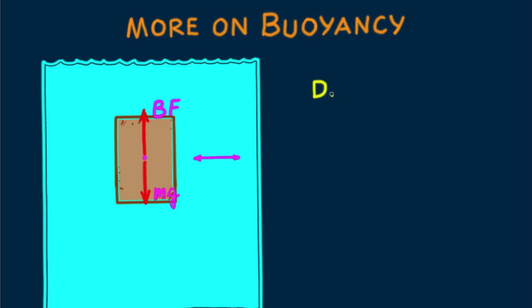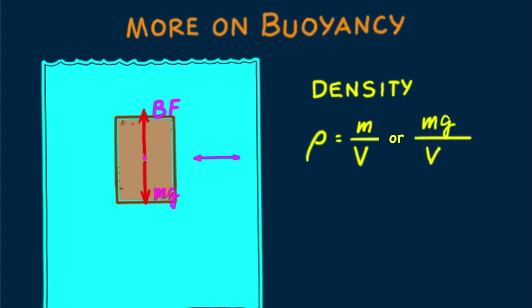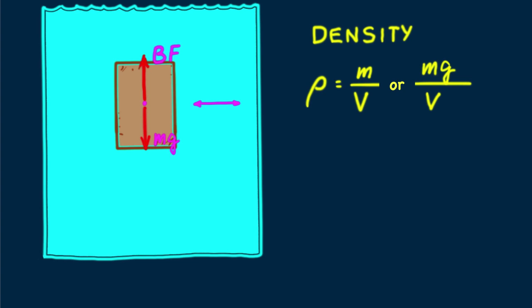A good way to determine whether rising, sinking, or neither occurs involves density. Recall that density is the ratio of mass to volume — rho equals mass per volume. Or if expressed as weight per volume, then we're talking about weight density. Here are three important rules: 1. An object more dense than water sinks. 2. Less dense than water floats. 3. With equal density as water, neither sinks nor floats. So an iron nail sinks, a piece of wood floats, and a fish with a density that matches water neither sinks nor floats.